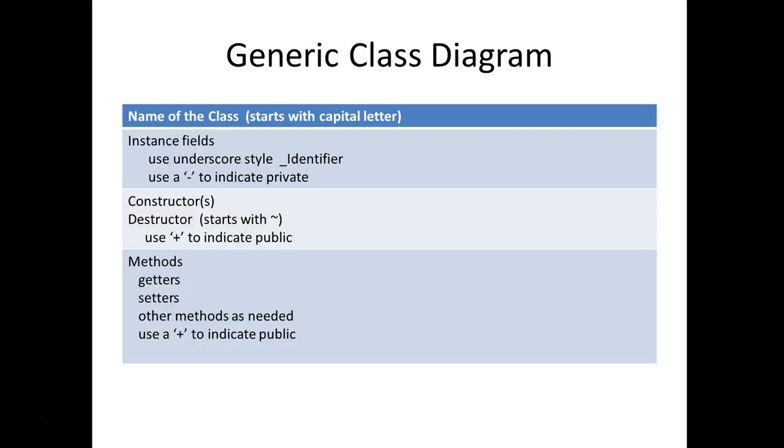This is a generic class diagram. We have worked with them just a little bit, but the generic class diagram has basically three parts. The name of the class, the instance fields, and then the methods. I have put the constructor and destructor into its own little section here, but these are methods that are used in the class. And then you have your typical methods, your getters, your setters, and your other methods as needed.